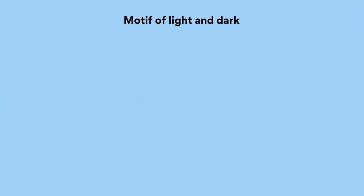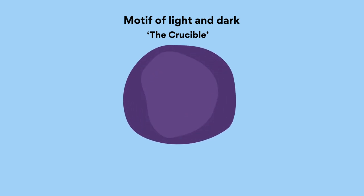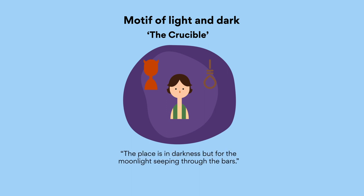Motif of dark and light. A motif is an image, sound, action, or other figure with a symbolic meaning that can be repeatedly seen throughout the text. In both Year of Wonders and The Crucible, we can find a motif of light and dark. For Miller, darkness and shadow are indicative of fear, doubt, and evil. In Act 4, when Proctor faces the choice between falsely confessing or hanging, the stage directions indicate the place is in darkness before the moonlight seeping through the bars. This darkness represents all the tragedy that has occurred in Salem during the witch hunt, as well as the damaging concept of fear and mistrust that characterize the town.